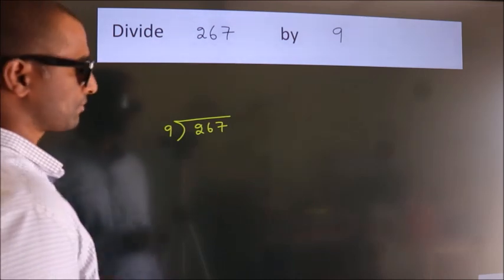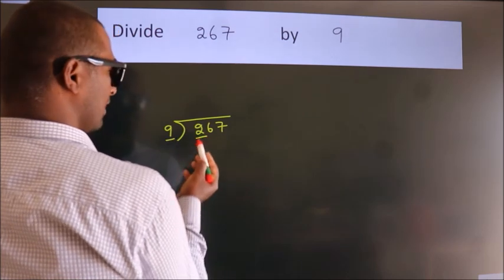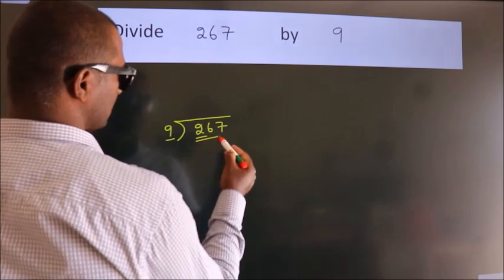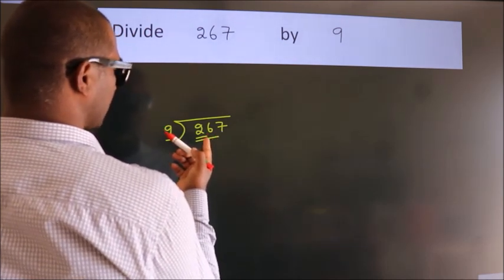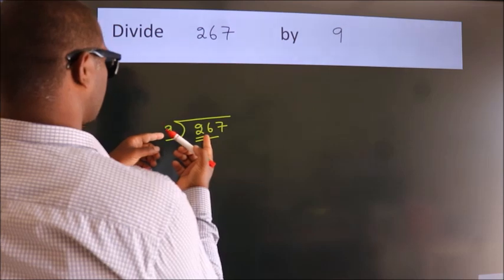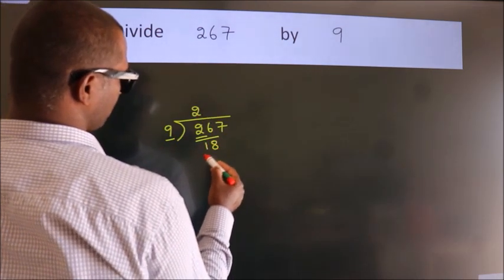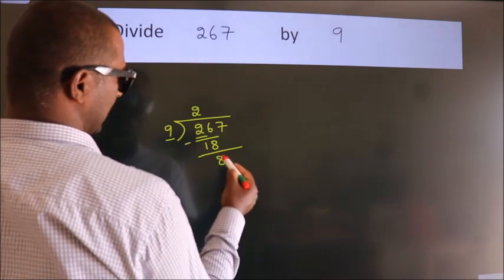Next, here we have 2, here 9. 2 is smaller than 9, so we should take 2 numbers: 26. A number close to 26 in the 9 times table is 2 nines, 18. Now we subtract and get 8.